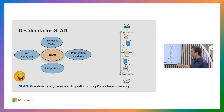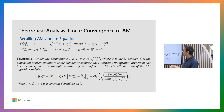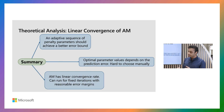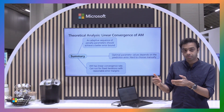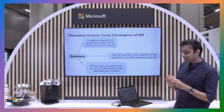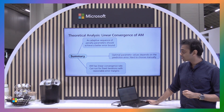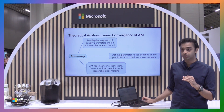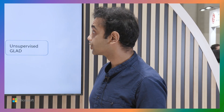We did some theoretical analysis. The key result is that an adaptive sequence of penalty parameters achieves a better bound — every iteration should adapt the penalty parameter value to the problem. As we saw in the experiments, it is hard to choose these hyperparameters manually. We also show linear convergence, meaning you can use a very small number of unrolled iterations to achieve convergence.